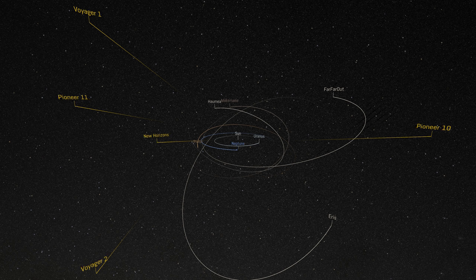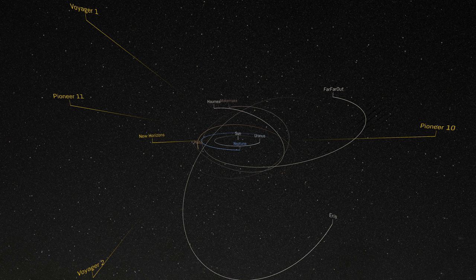Discovered in 2019, it's 140 times further away from the Sun than the Earth. Light from the Sun is 20 hours old by the time it reaches Far Far Out.